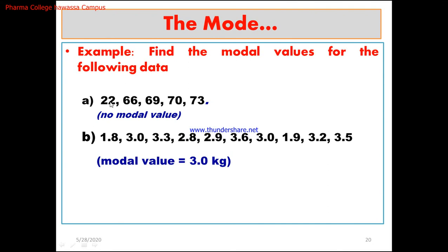For example, 22, 66, 69, 77, 73 — in this case there is no mode, because every value occurs only once. Mode can be present or absent. From the data with values occurring at different frequencies, the mode can be found. You can also read further to understand this.